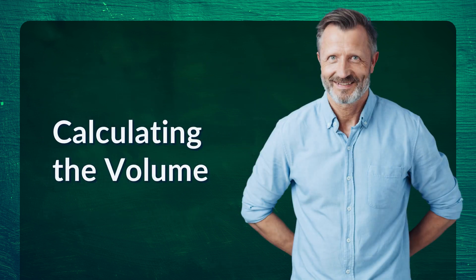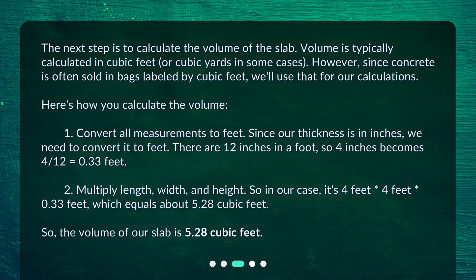Calculating the Volume. The next step is to calculate the volume of the slab. Volume is typically calculated in cubic feet, or cubic yards in some cases. Since concrete is often sold in bags labeled by cubic feet, we'll use that for our calculations. First, convert all measurements to feet — since our thickness is in inches, we need to convert it: there are 12 inches in a foot, so 4 inches becomes 4 divided by 12, which equals 0.33 feet. Then multiply length, width, and height: 4 feet × 4 feet × 0.33 feet equals about 5.28 cubic feet.